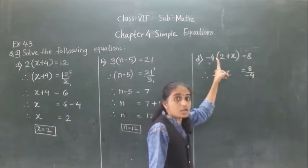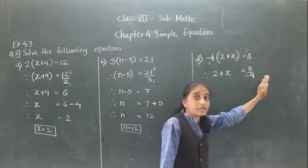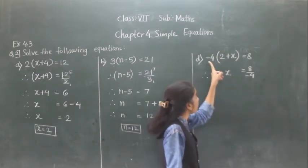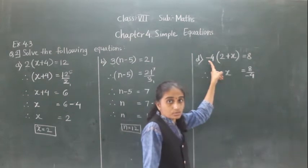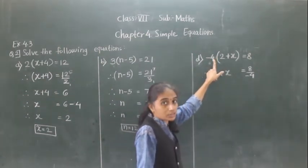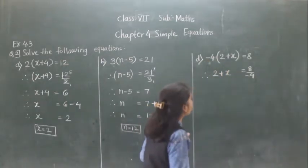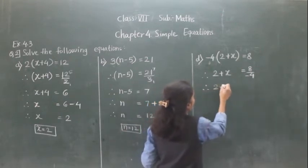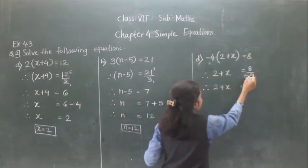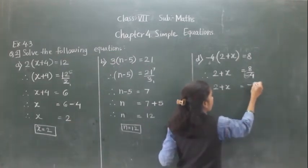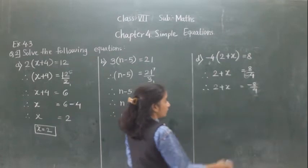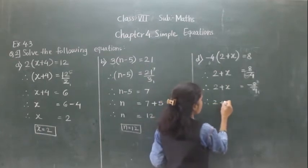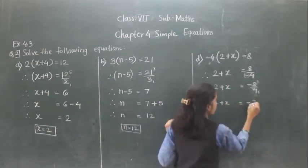Here is multiplication. If we transfer this to the other side, it will become division. We are only going to divide this number to this side — we are not going to change the sign for multiplication operations. So 2 plus x is equal to minus 2.